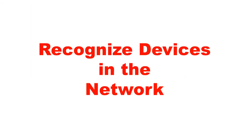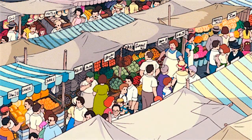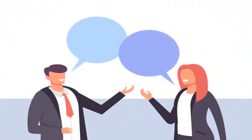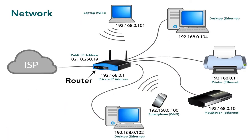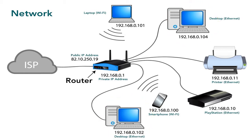Let us understand how we recognize devices in the network. We do not talk with each and every person we see around us — our requirement is to talk with a specific person at a specified time. Same in the computer network: the need arises to communicate with a particular device during a particular time. Therefore, our networking device must find that exact intended device over the vast computer network, and that is only possible with a unique identity of that device.